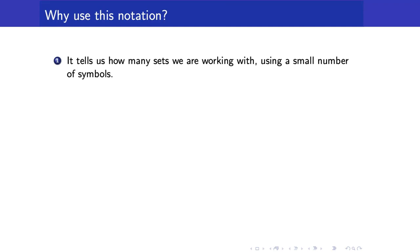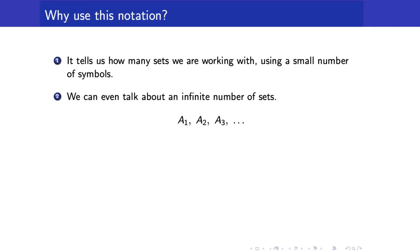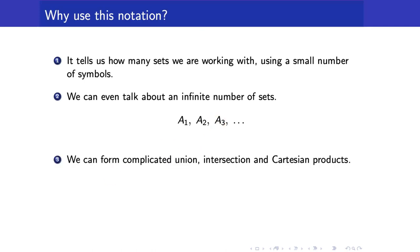Why do we use this notation? First, it tells us how many sets we are working with using only a small number of symbols. So for example, here we know that we have 26 sets and we are only using the letter a instead of having 26 different symbols. Second, we can even talk about an infinite number of sets. We can also form complicated union, intersection, and Cartesian products, and this is what we are going to do in this section.